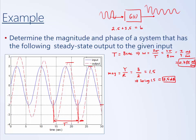We can also estimate the phase. The output is lagging behind the input — the input reaches its peak, but the output doesn't reach its peak until some time later. Looking at the distance between peaks, that lag looks like somewhere between 1 and 2 seconds.